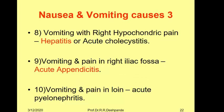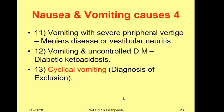Vomiting with right hypochondriac pain — in the upper abdomen above the umbilicus on the right side — suggests inflammation of the liver (hepatitis) or inflammation of the gallbladder (cholecystitis). Going lower, vomiting with pain in the right iliac fossa suggests acute appendicitis, which is an emergency. Vomiting with pain in the loin region suggests kidney problems such as acute pyelonephritis.